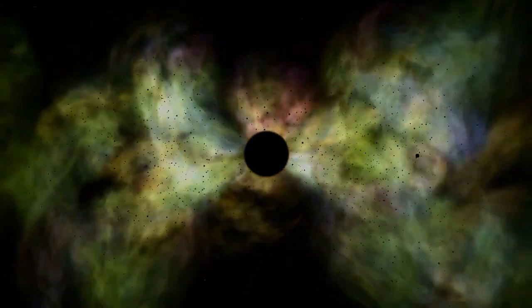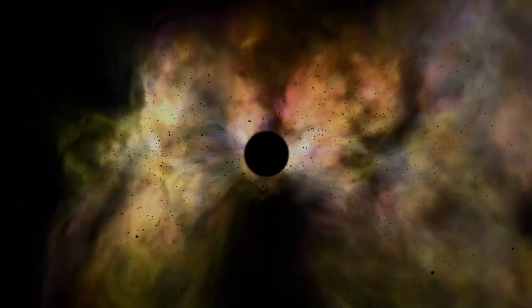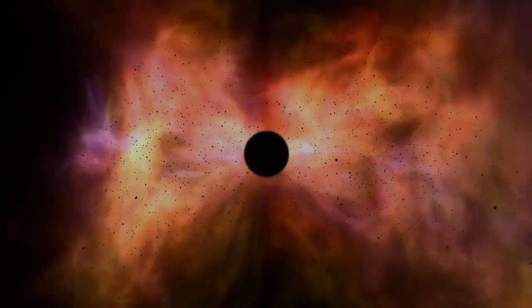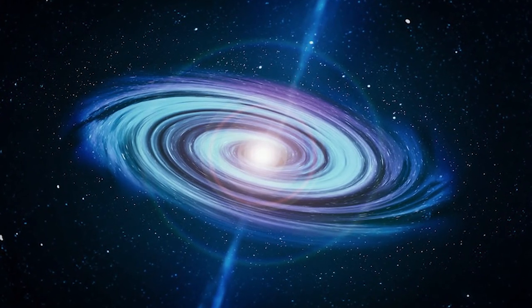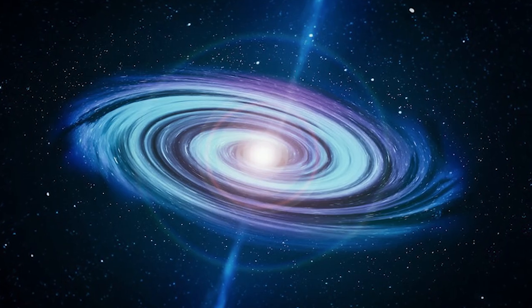It possesses mass, it spins, and it even sports a ring of dust and gas encircling its event horizon. However, what truly surprises us is when the black hole-like object suddenly emits material into the surrounding space.